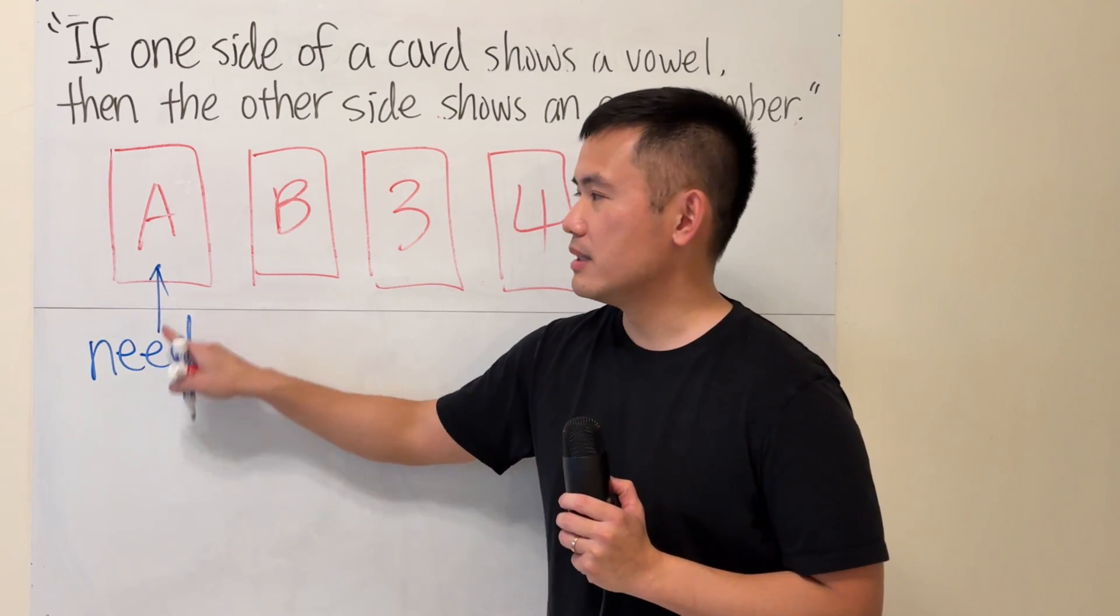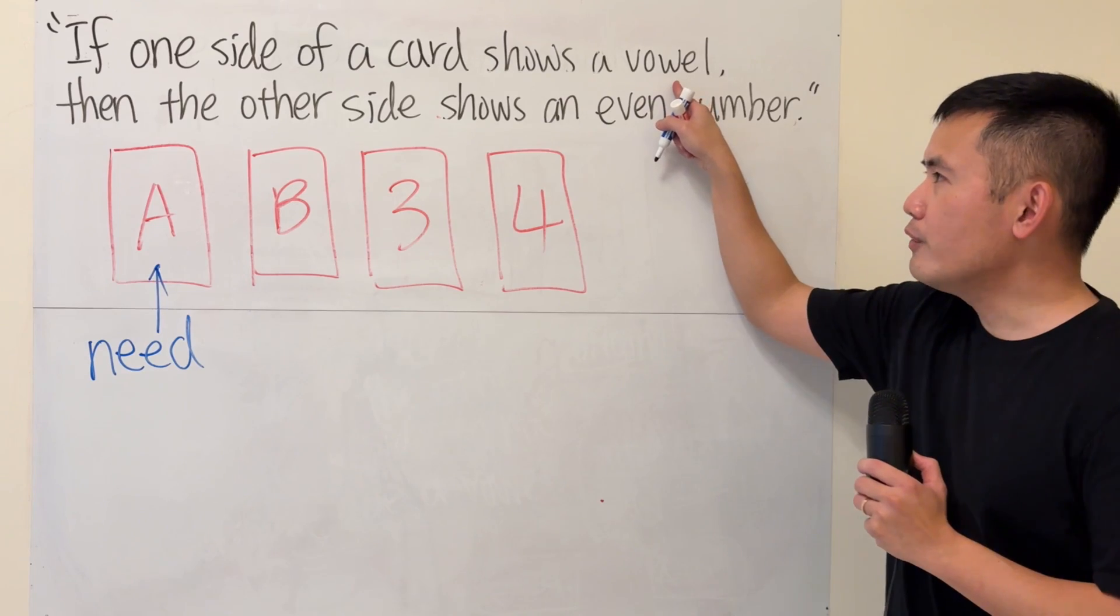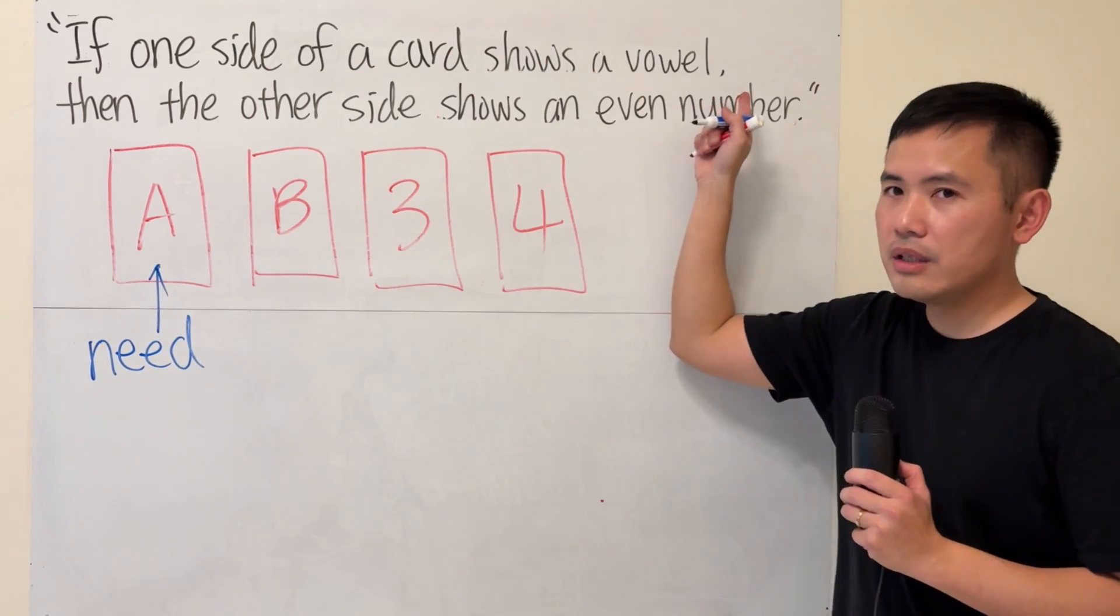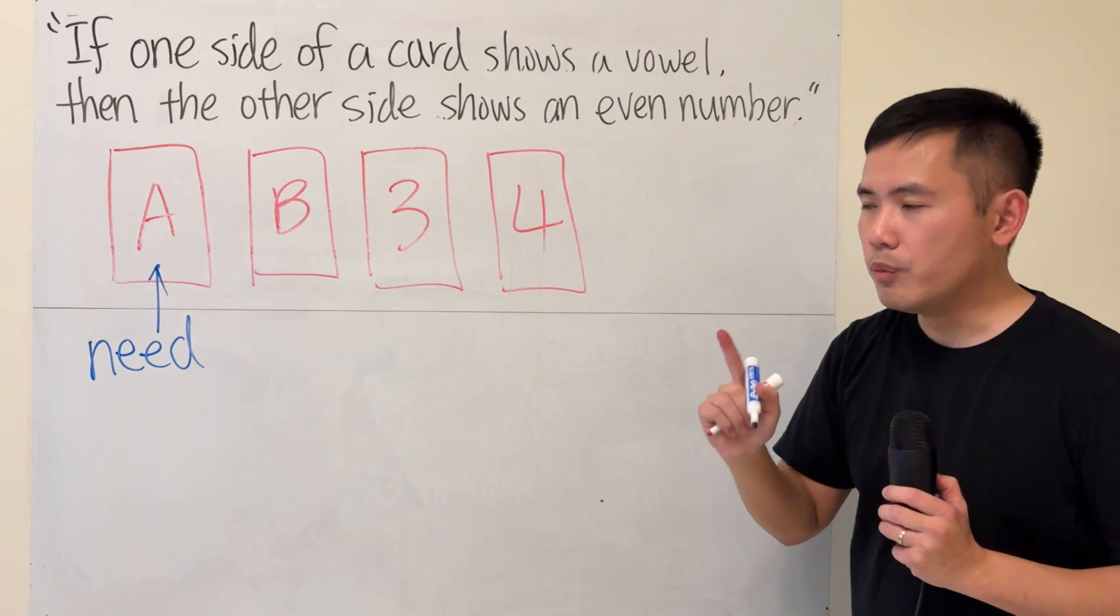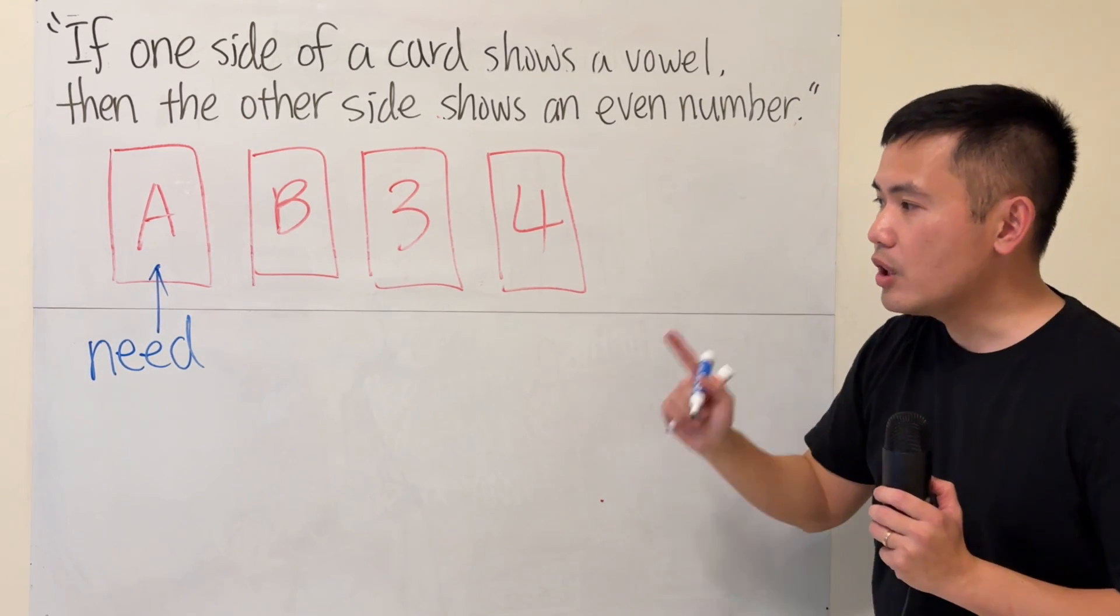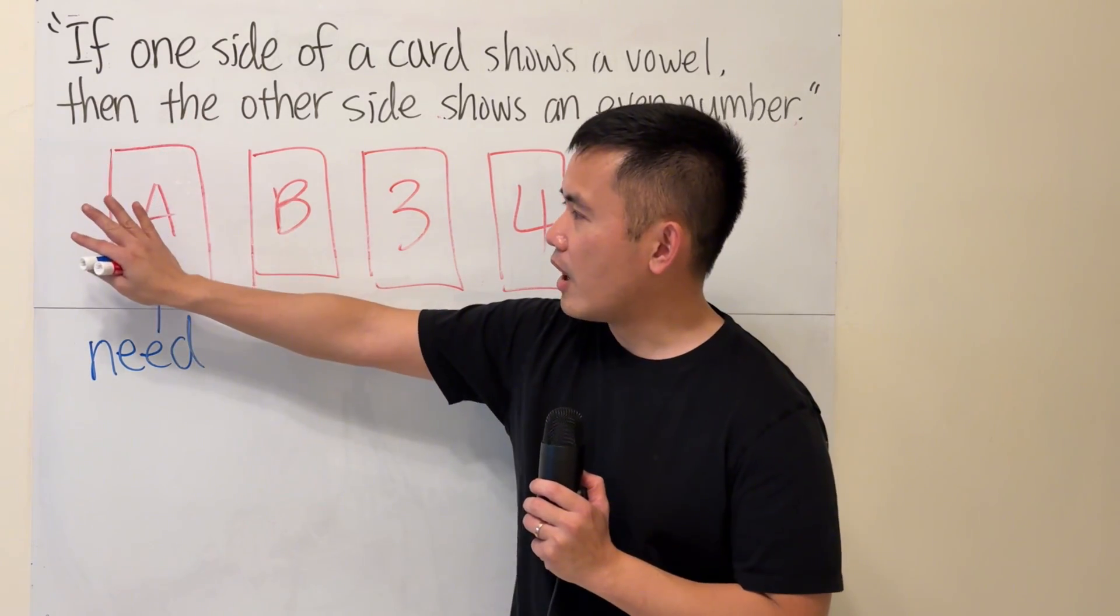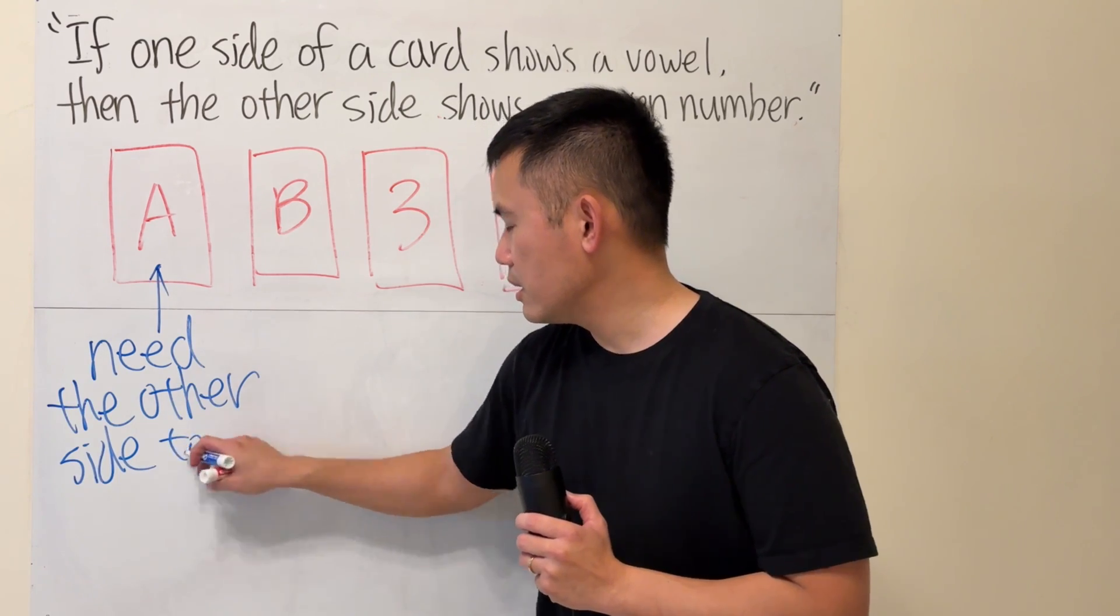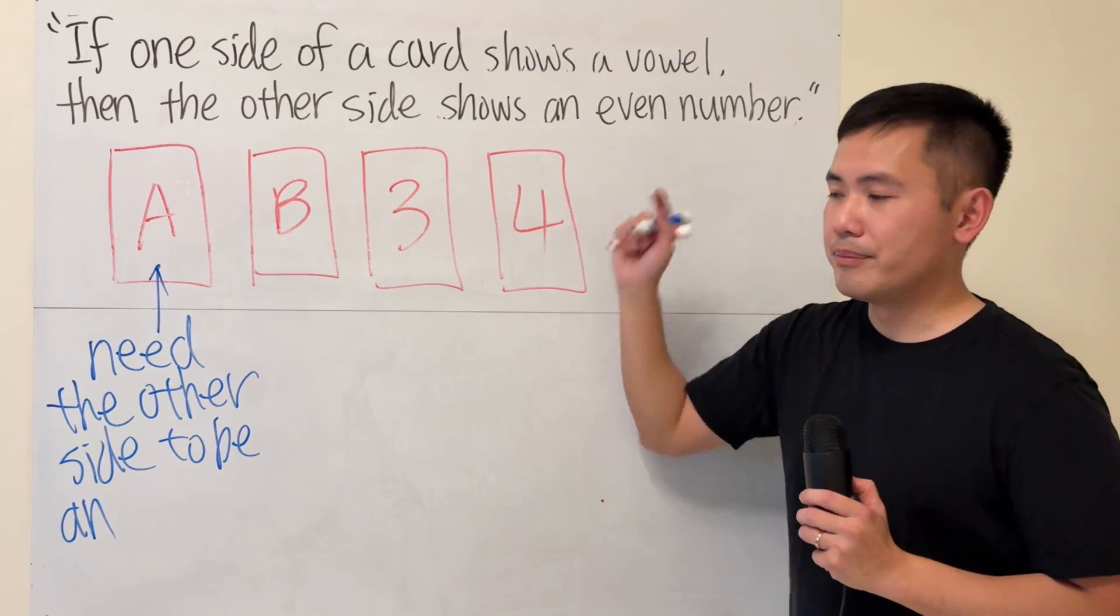And the reason for that is because A is a vowel, which this card satisfies the condition, so that means we must also satisfy this conclusion. So we must flip the card and make sure the other side - I'll just write - need the other side to be an even number.